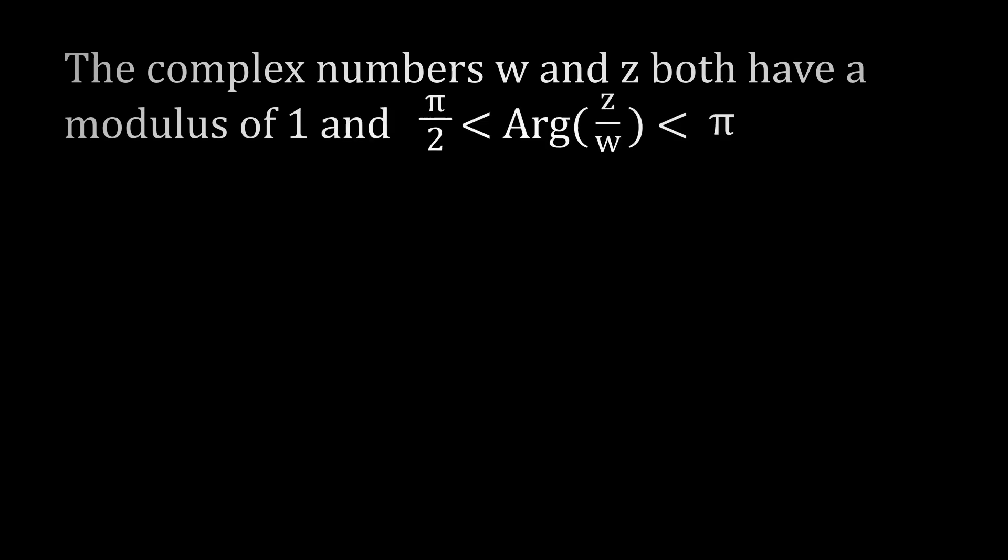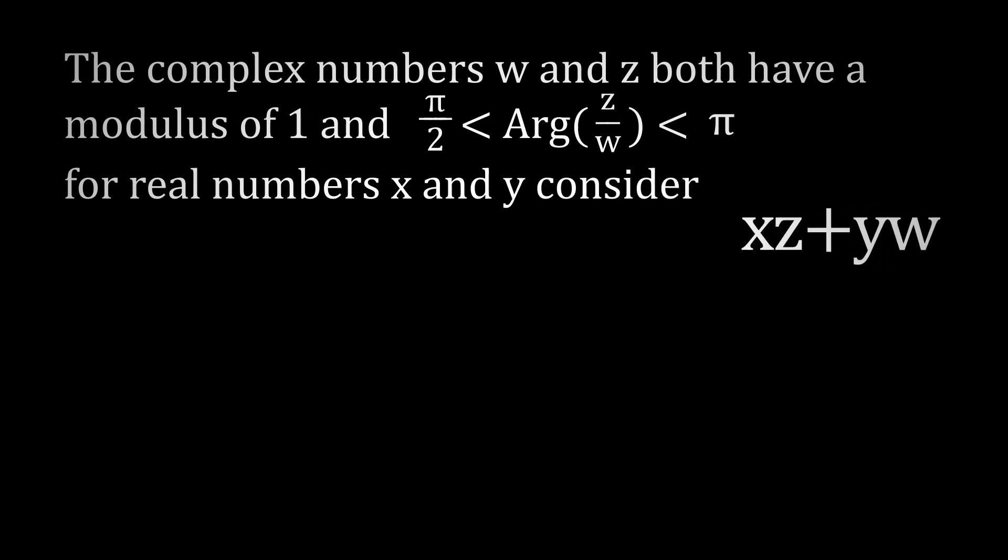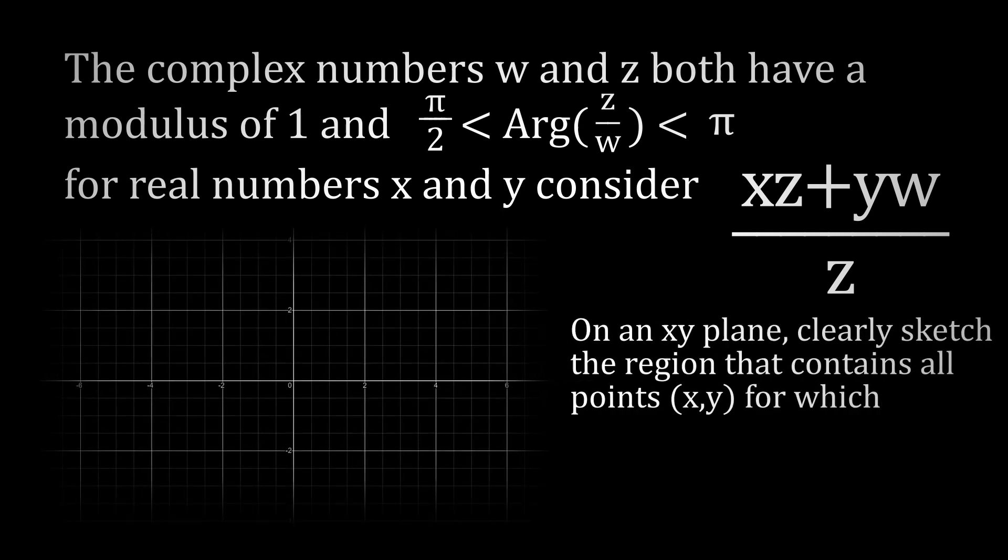The complex numbers w and z both have a modulus of 1, and the argument of their division is in between pi divided by 2 and pi. For real numbers x and y, consider the complex number xz plus yw divided by z. On an xy plane, clearly sketch the region that contains all points xy for which its argument is between pi divided by 2 and pi.